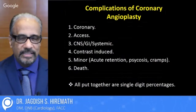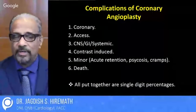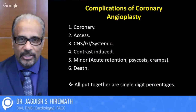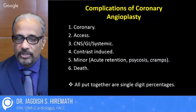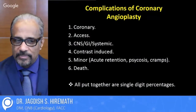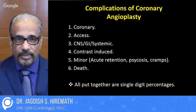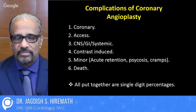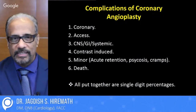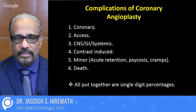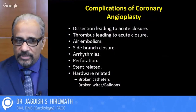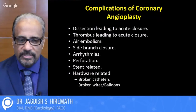When performing angioplasties, it's a 3-millimeter artery and you are performing about one meter away from your hands. You have wires which are steel — so it's like holding a snake in your hand. The complications could be related to wires causing perforation, stent over-expansion, contrast-induced nephropathy, gastrointestinal bleeds, minor things like acute retention, psychosis, cramps, or of course mortality when doing very complex angioplasties. But all put together, these complications are single-digit. It could be dissection, thrombus, air embolism, side branch closure, arrhythmias, perforations, and many other things which can go wrong.